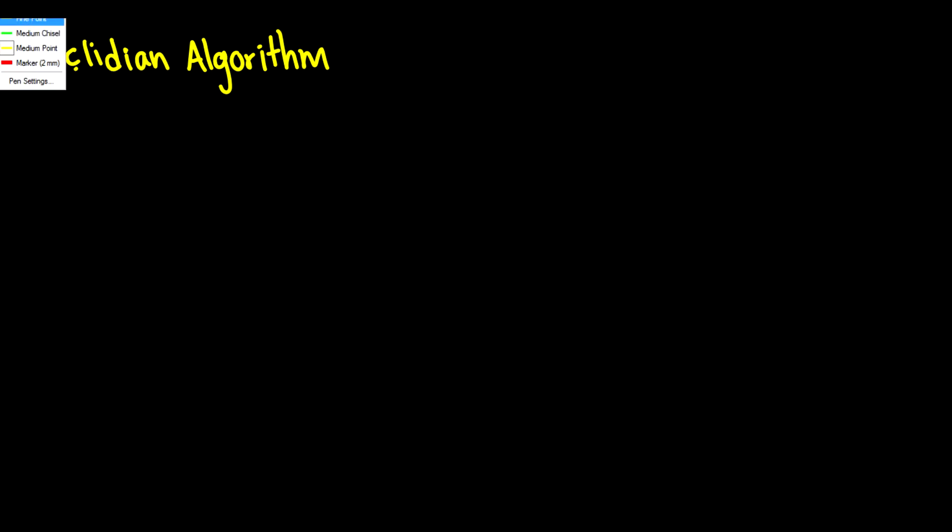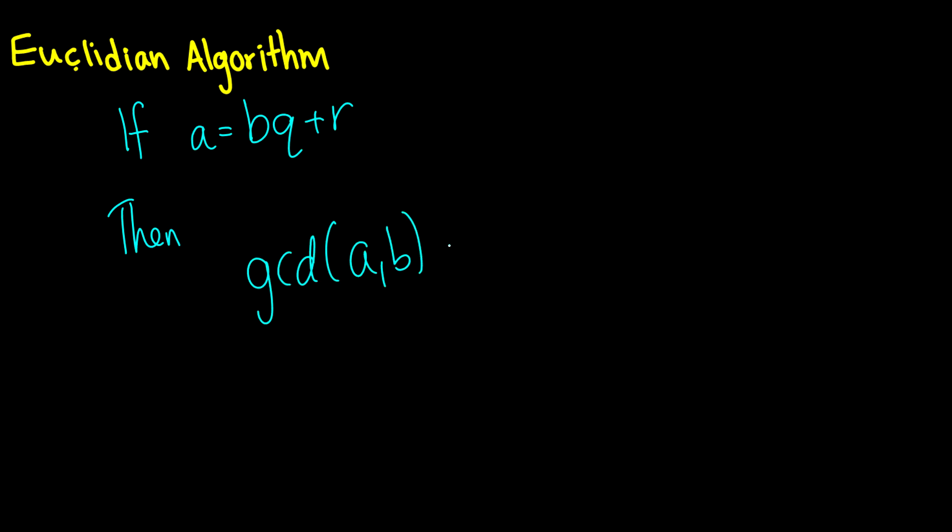All right, today we're going to talk about the Euclidean algorithm, which I've been alluding to in a few videos. In case you forgot, or I should introduce it for the first time, if we have A equals B times Q plus R, then the GCD of A and B is going to equal the GCD of B and R.